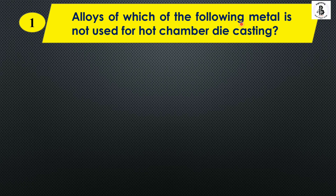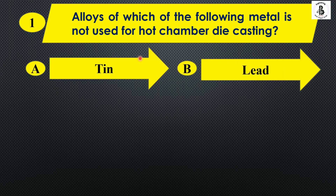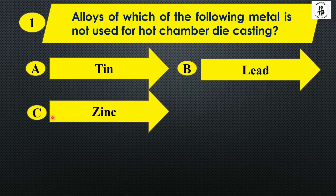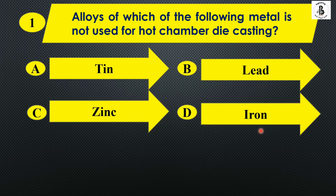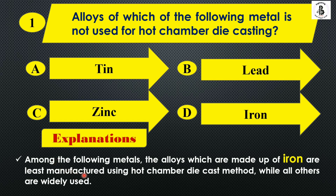Alloys of which of the following metals is not used for the hot chamber die casting process? Option A: tin, Option B: lead, Option C: zinc, and Option D: iron. In hot chamber die casting, the alloys made of iron are least manufactured using this process. The rest — tin, zinc, and lead — are manufactured with the help of hot chamber die casting. So the right answer is Option D, iron.